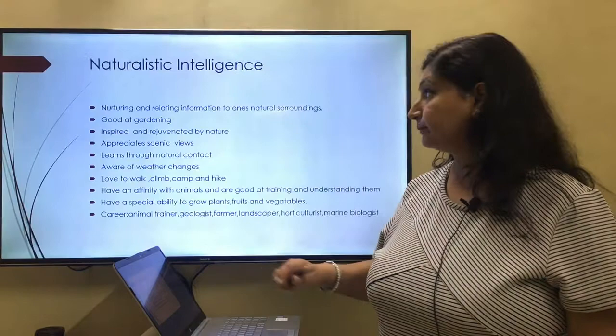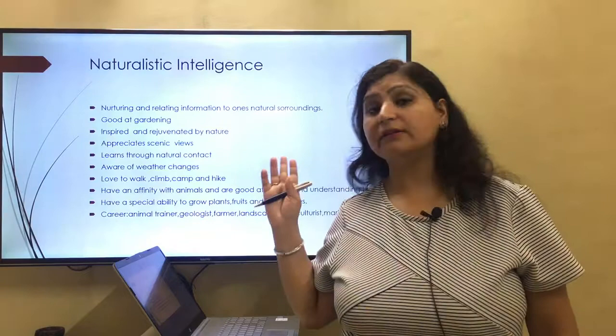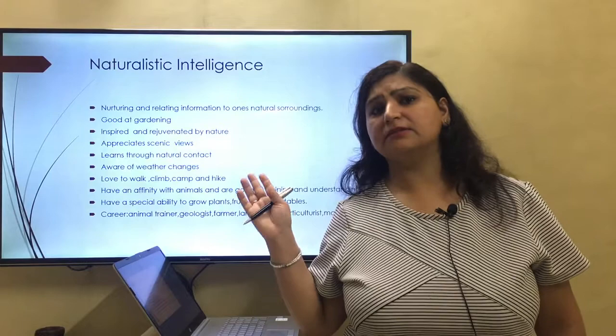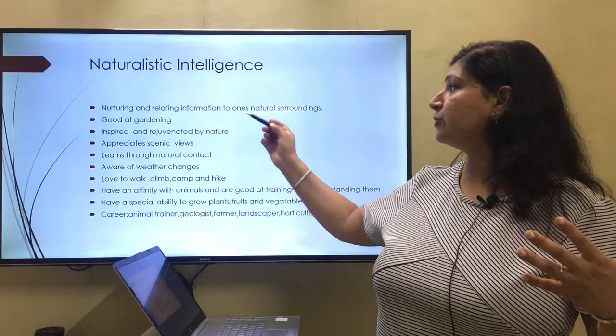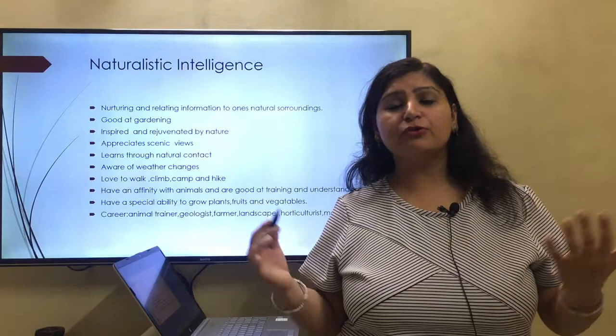The last intelligence is naturalistic intelligence — the 8th one. This was proposed by Gardner in the 1990s, not in 1983. Naturalistic intelligence is about nurturing and relating information to natural surroundings. You have knowledge about your environment, you have concerns about your environment, and you learn through natural contact.